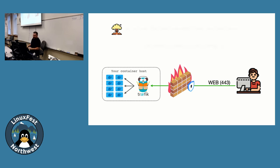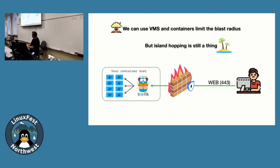We can use VMs and containers to limit the blast radius, but island hopping is still a thing — you're still on the TCP/IP network within that location. If there's a vulnerability in the stack somewhere, like XZ with SSH fairly recently, or Heartbleed, people can get from that traffic instance to anywhere else on your subnet. It's still an imperfect solution even if we follow best practices with secure models and DMZs.